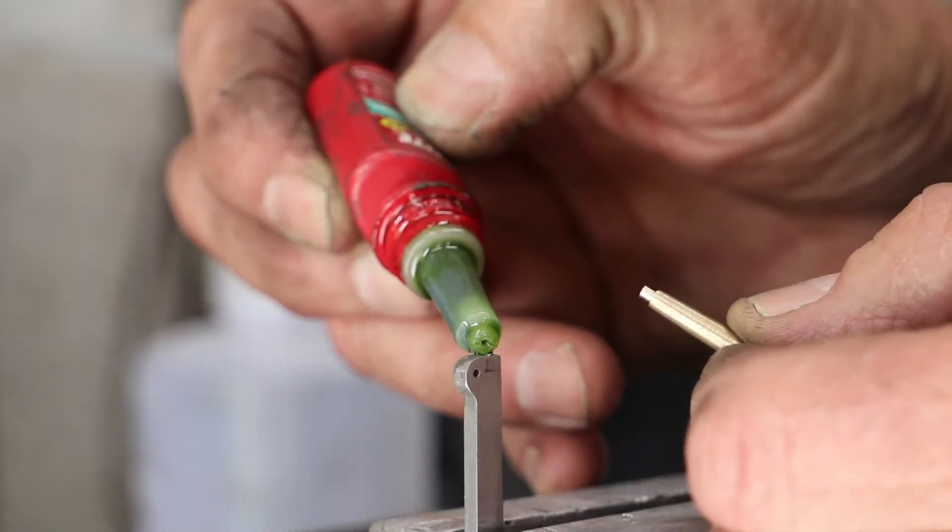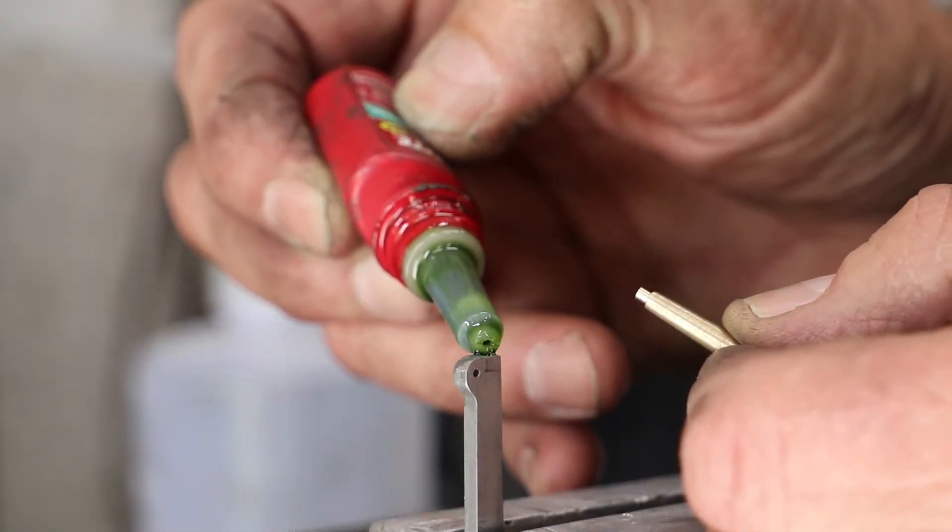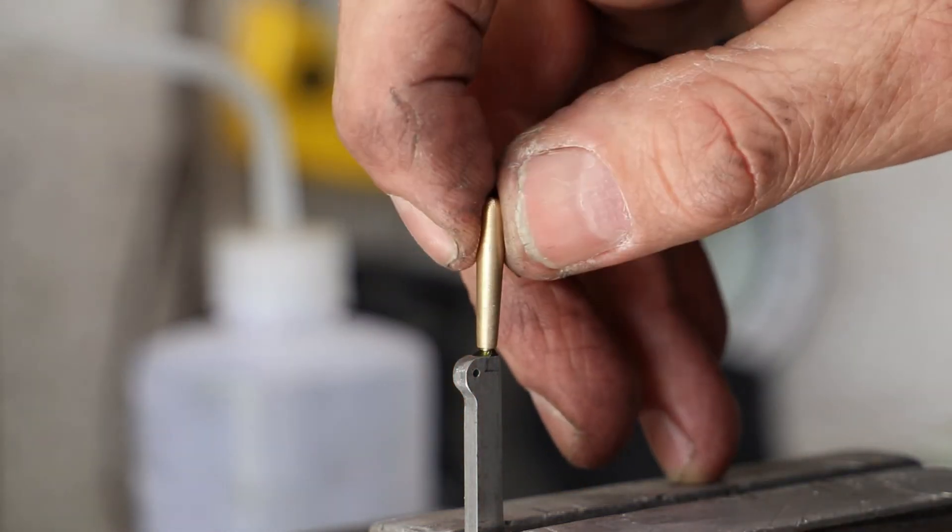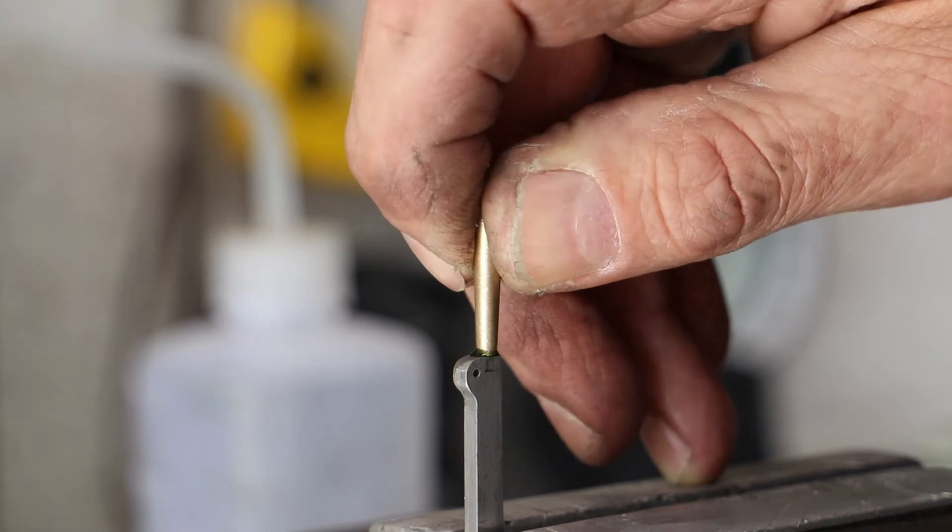Rightly or wrongly, and time will tell, rather than soldering the handle into place I actually use some Loctite 648. I don't think it will get that hot in use to break the Loctite, but if it does, it's an easy fix later on.